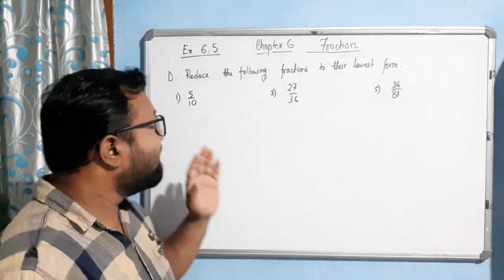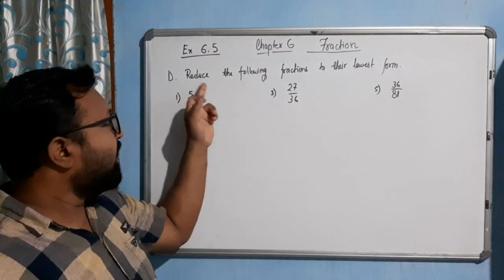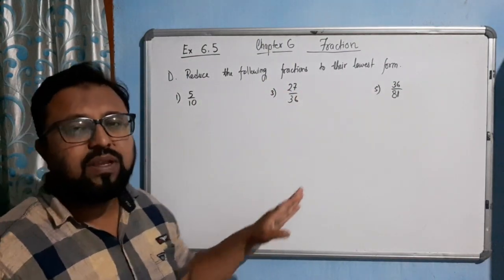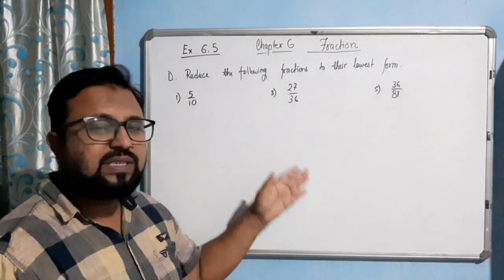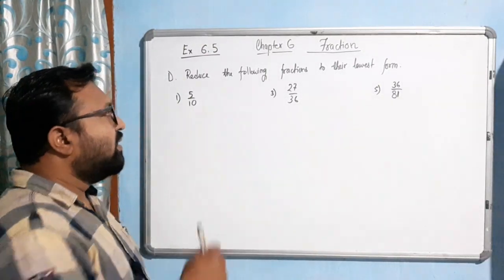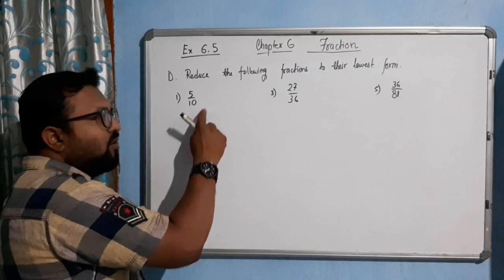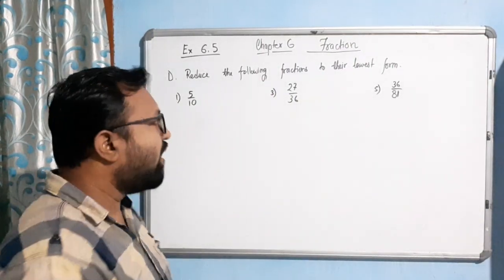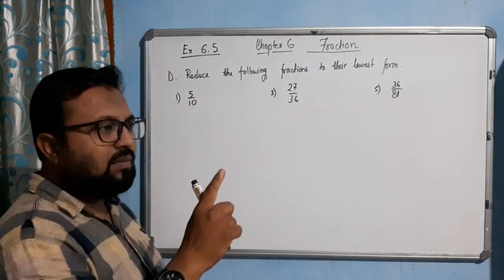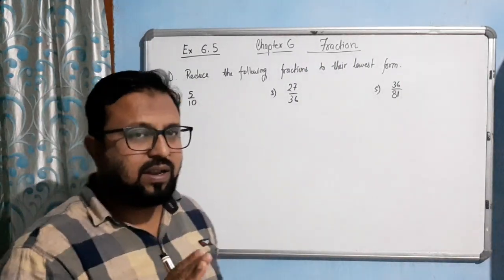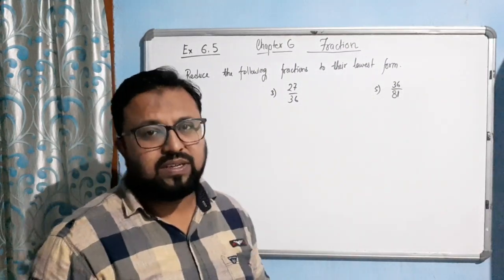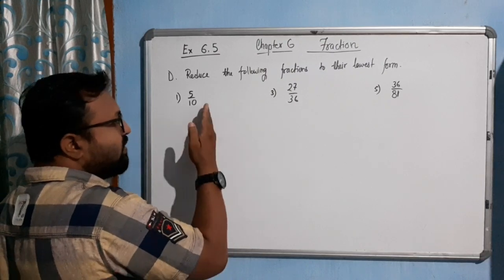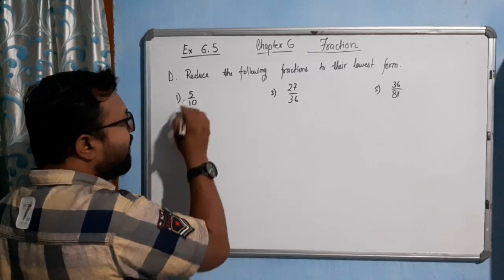Hello students, now come to the last question, question D of the exercise: reduce the following fractions in their lowest form. Lowest form, simplest form, and standard form are the same thing — it means both the numerator and denominator should have only one common factor, that is one. You can divide numerator and denominator by only one number, and none other. So to make it into simplest form or lowest form, what we will do is find the HCF.